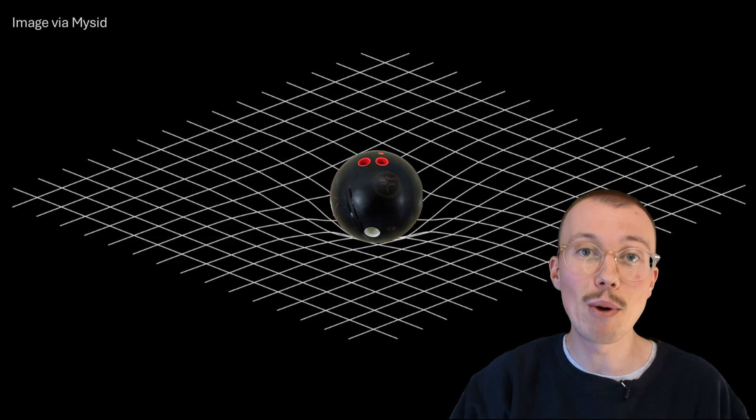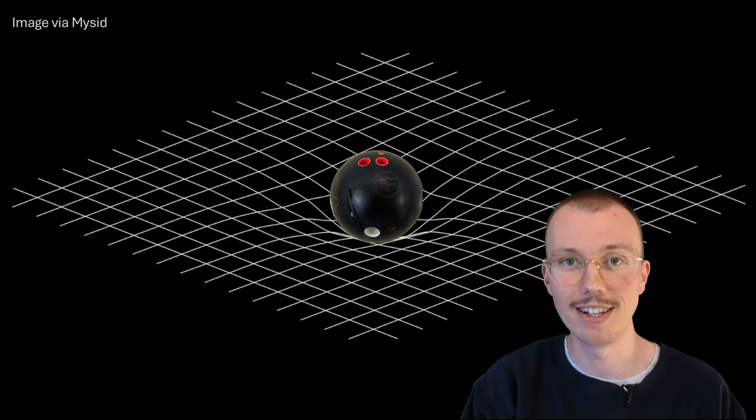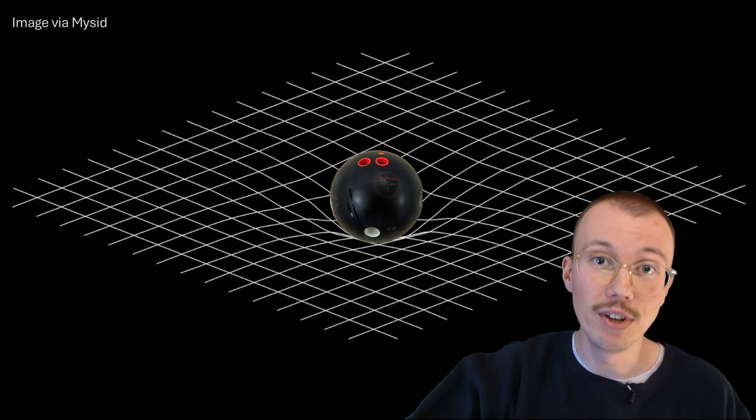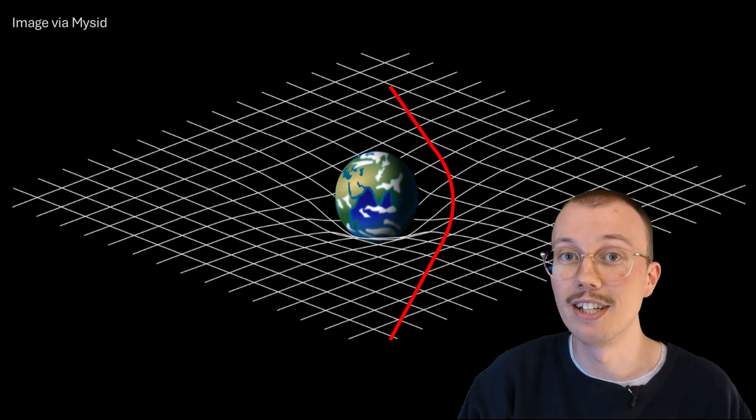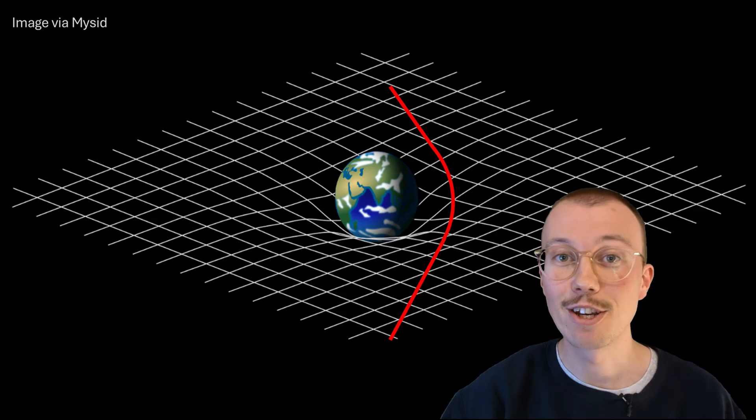To visualize this, think of a bowling ball placed in the center of a trampoline. Its weight will warp the fabric around it, and if you try to roll another ball near it, it will be pulled in towards the center, just like an object will be pulled in by a planet's gravity. And crucially, this pull affects light too.